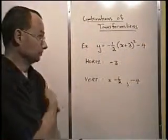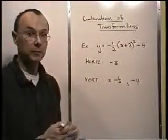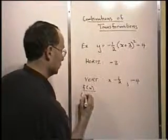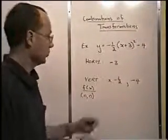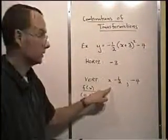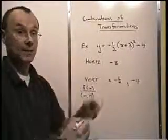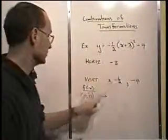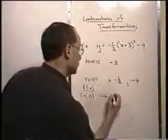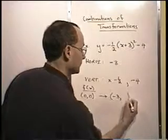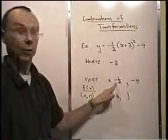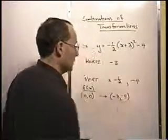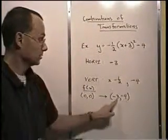Now I'm going to think back to the graph — in this case a parabola. One of the very important points in the original function was the vertex at zero, zero. We're going to take that x value and subtract 3, so it becomes negative 3. For the y value, we multiply by negative one-half, which keeps it as zero, and then subtract 4, giving negative 4. So the vertex has moved from (0, 0) to (−3, −4).